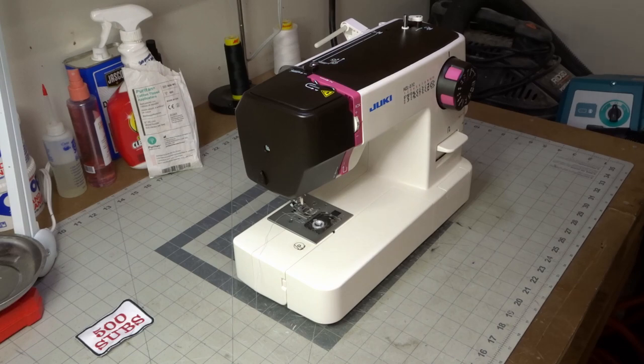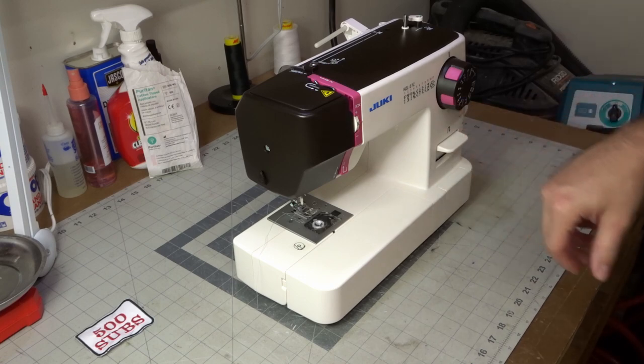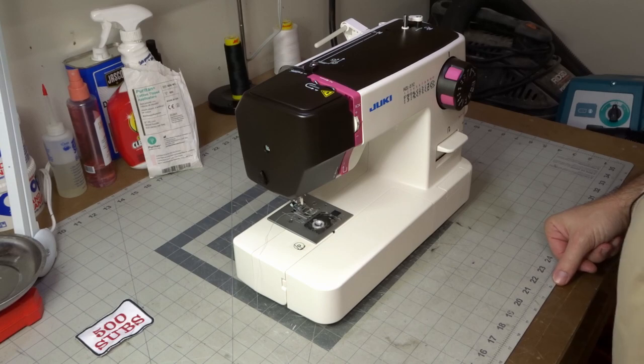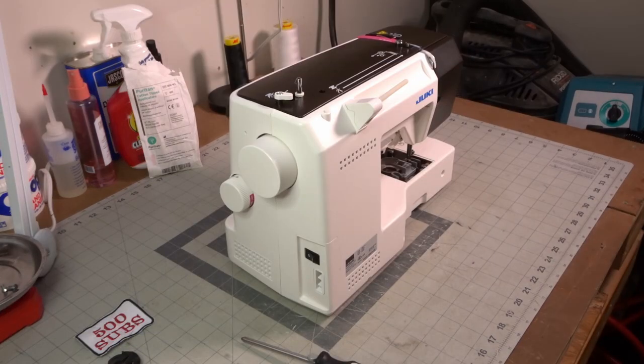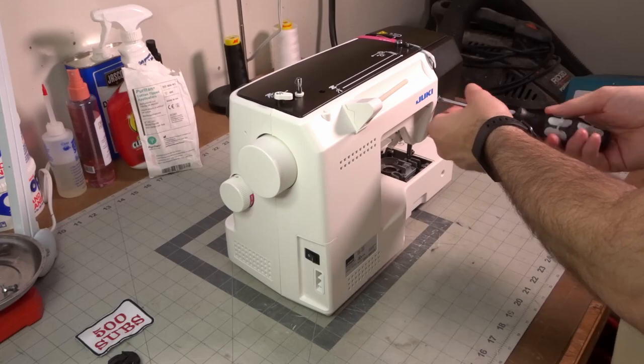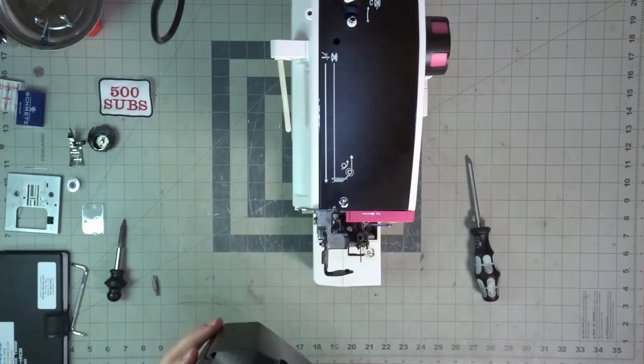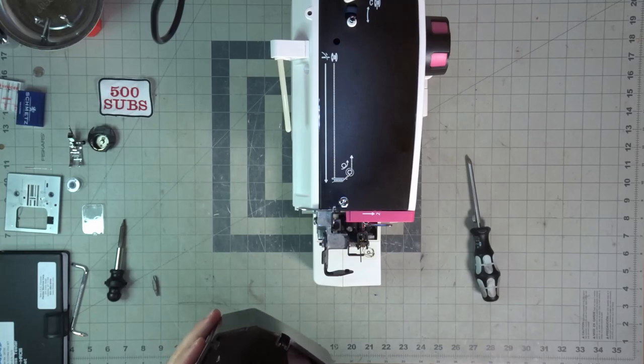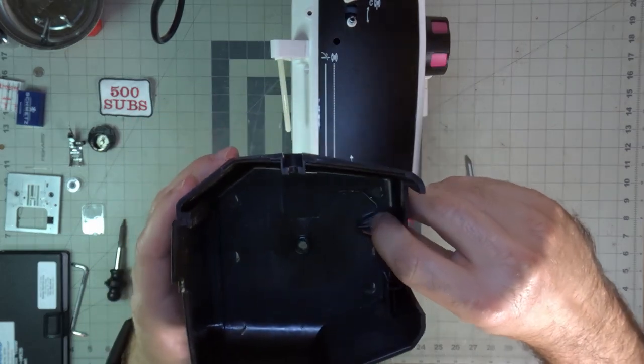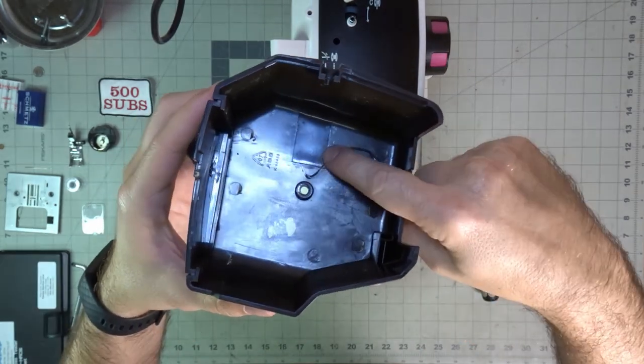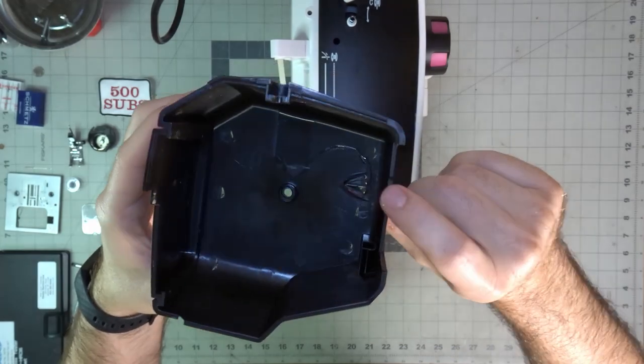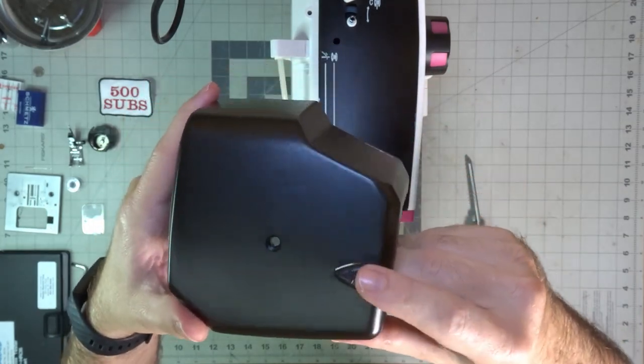Now it's time for the teardown because we want to see what's inside this machine. Again, we're doing the Juki HZL27Z. What we have inside, we've got glue that holds on. You look inside here, there's a daub of glue and that glue is holding on to the knife for your thread cutter right here.